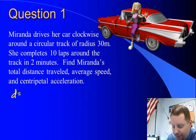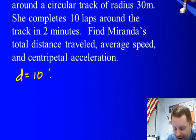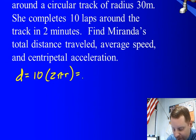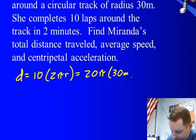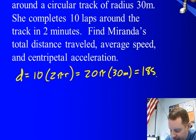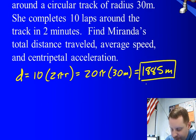Well, let's start with her distance traveled. Distance, well, she completes 10 laps, so it'll be 10 times around the track, 2πr, the circumference of the track, or 20 times π times our radius of 30 meters, for a total of about 1,885 meters. Great.